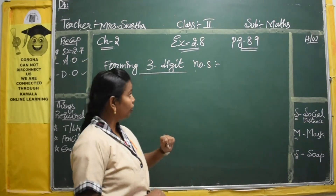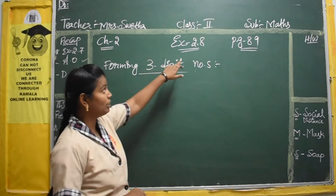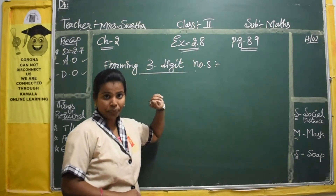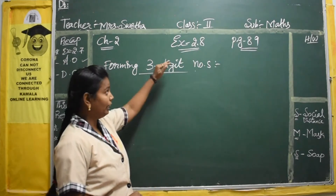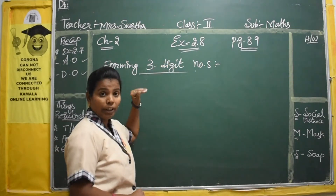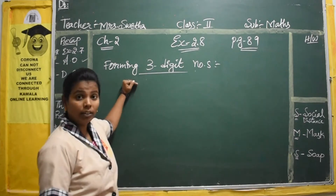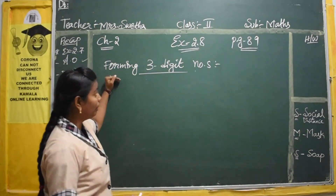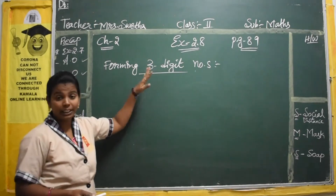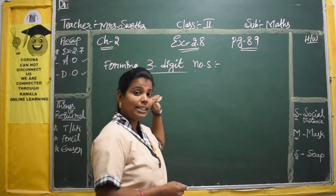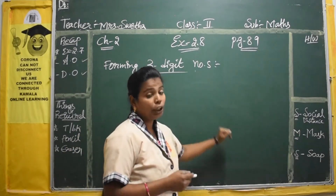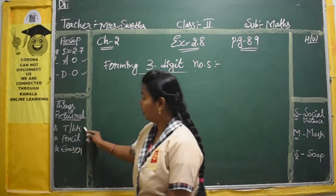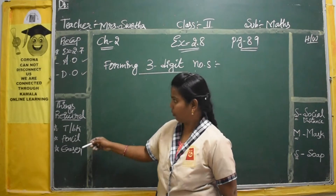Today we are going to start with exercise number 2.8. In this 2.8, we are going to learn the forming of three-digit numbers. For doing this exercise, you need your term book, pencil, and eraser.